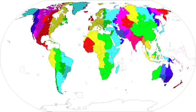African countries using UTC plus 3 as standard time include: Comoros, Djibouti, Eritrea, Ethiopia, Kenya, Madagascar, Mayotte, and scattered islands in the Indian Ocean including Bassas da India, Europa Island, and Juan de Nova Island.